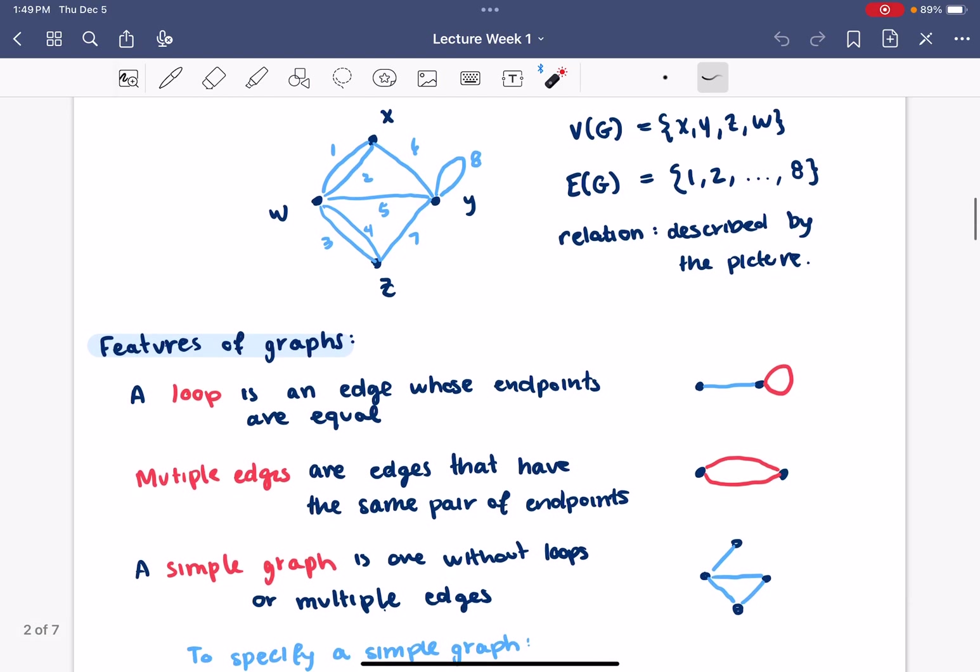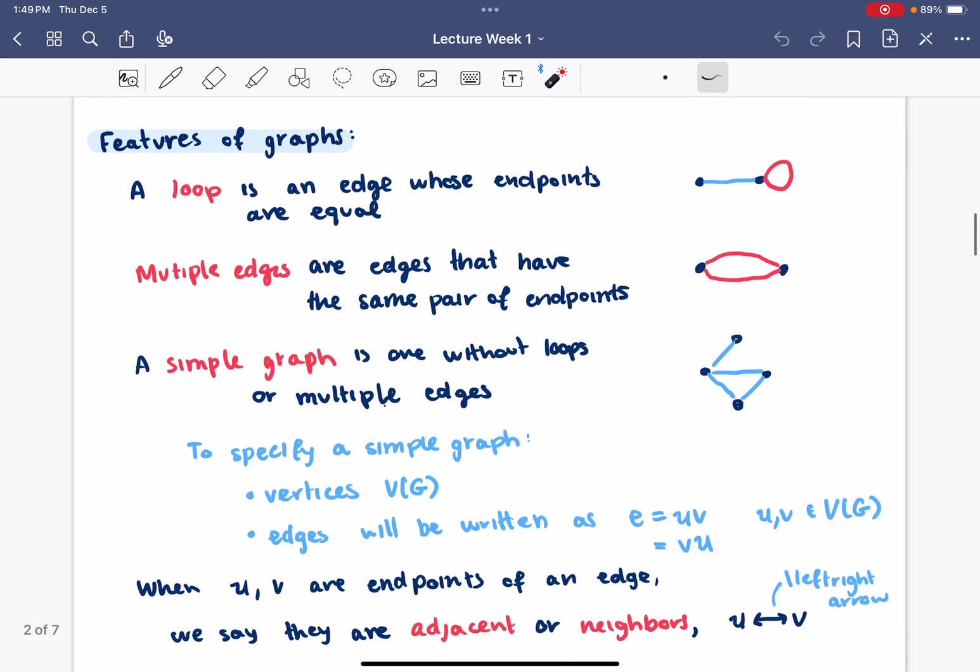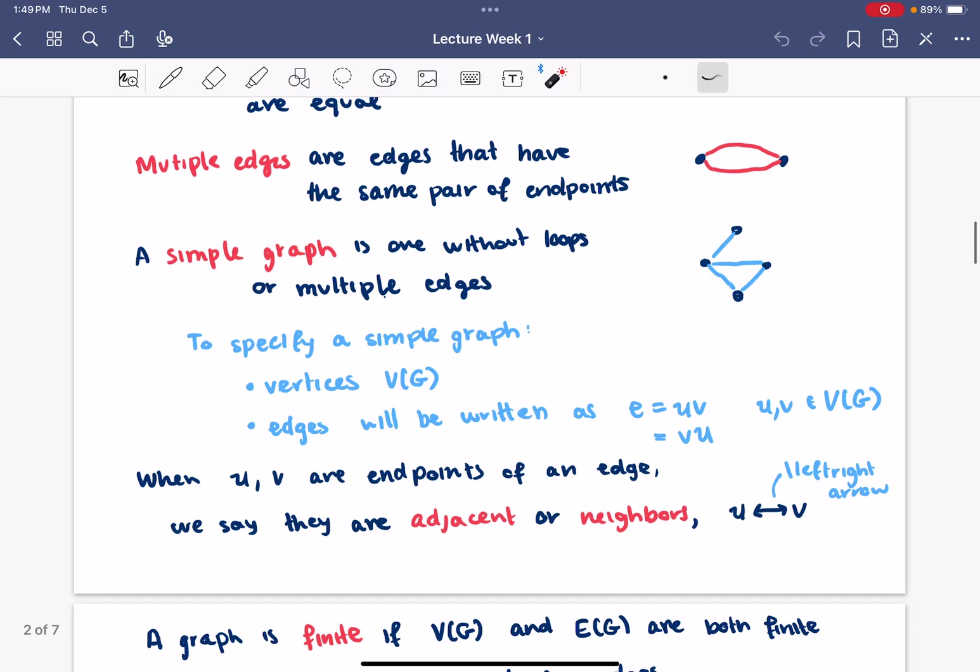A loop is an edge whose endpoints are equal, so it's this red thing in the picture. Multiple edges are edges that have the same pair of endpoints. So, you might have more than one edge going between a pair of vertices. A simple graph is one that doesn't have either of those features - no loops or multiple edges. To specify a simple graph, it's sufficient to just tell you what the vertices are and to write the edges as being specified by their endpoints.